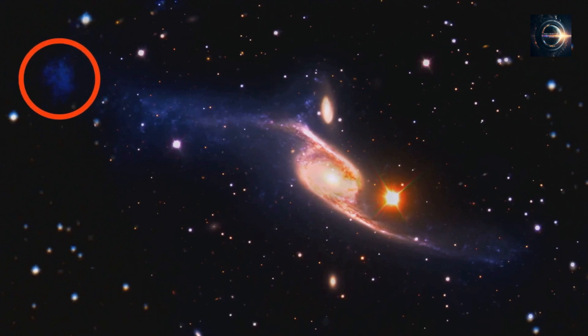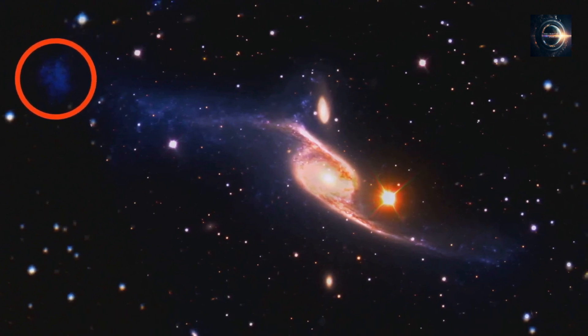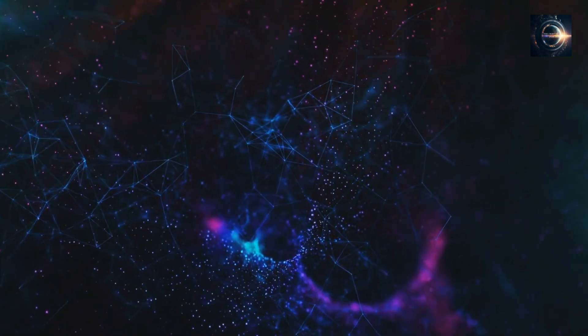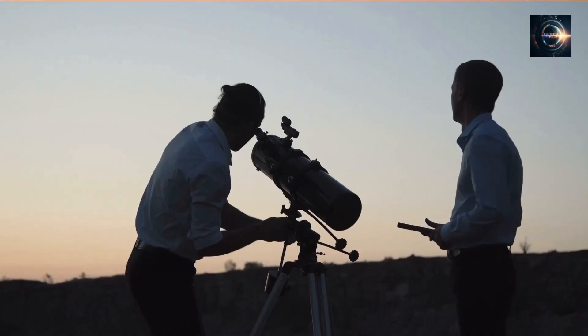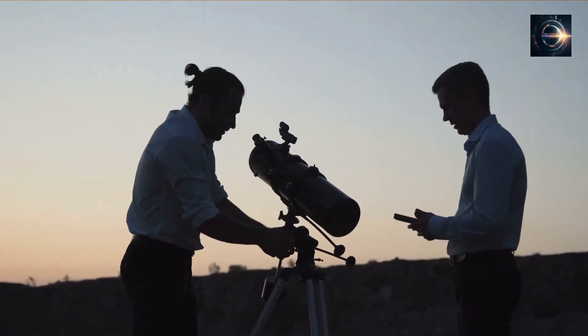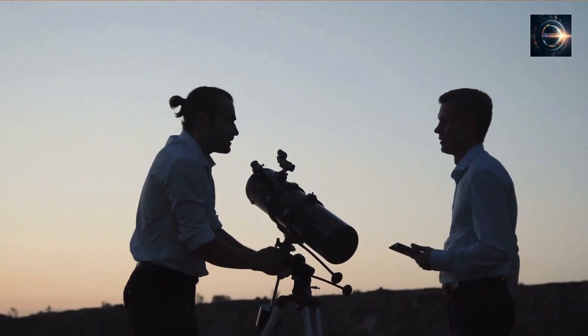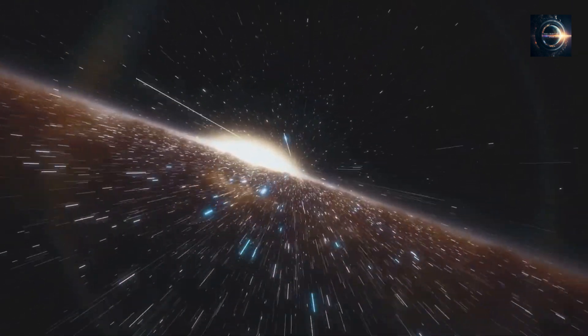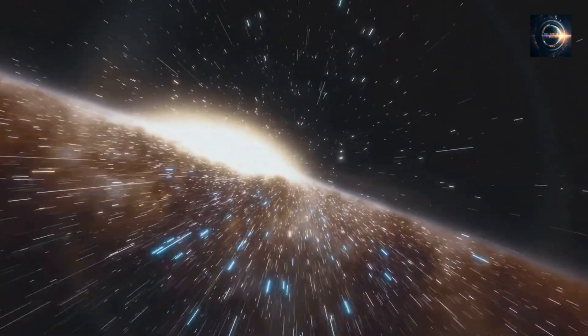They contain only a few hundred to a few thousand stars, making them some of the faintest galaxies known in the universe. Their structures are mostly dominated by dark matter. Astronomers are interested in them because they contain valuable information about the early universe. All the UFDs discovered so far are very old galaxies that formed just a few hundred million years after the Big Bang. The reason why the missing satellite problem still exists could be dark galaxies, the primary focus of this study.